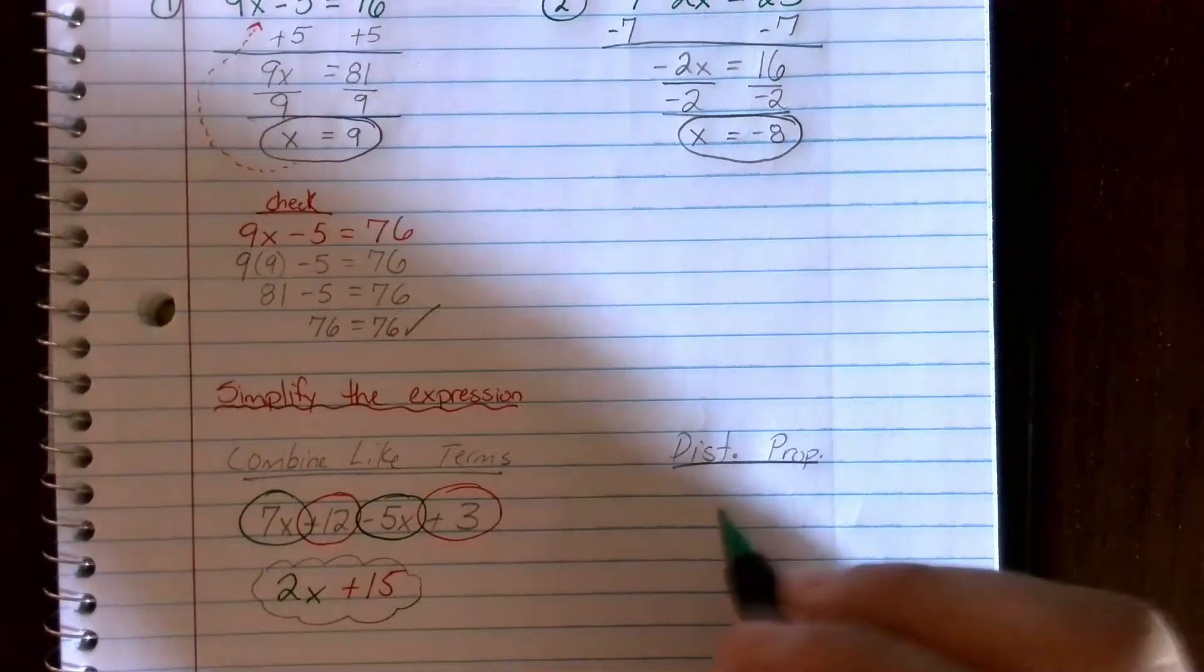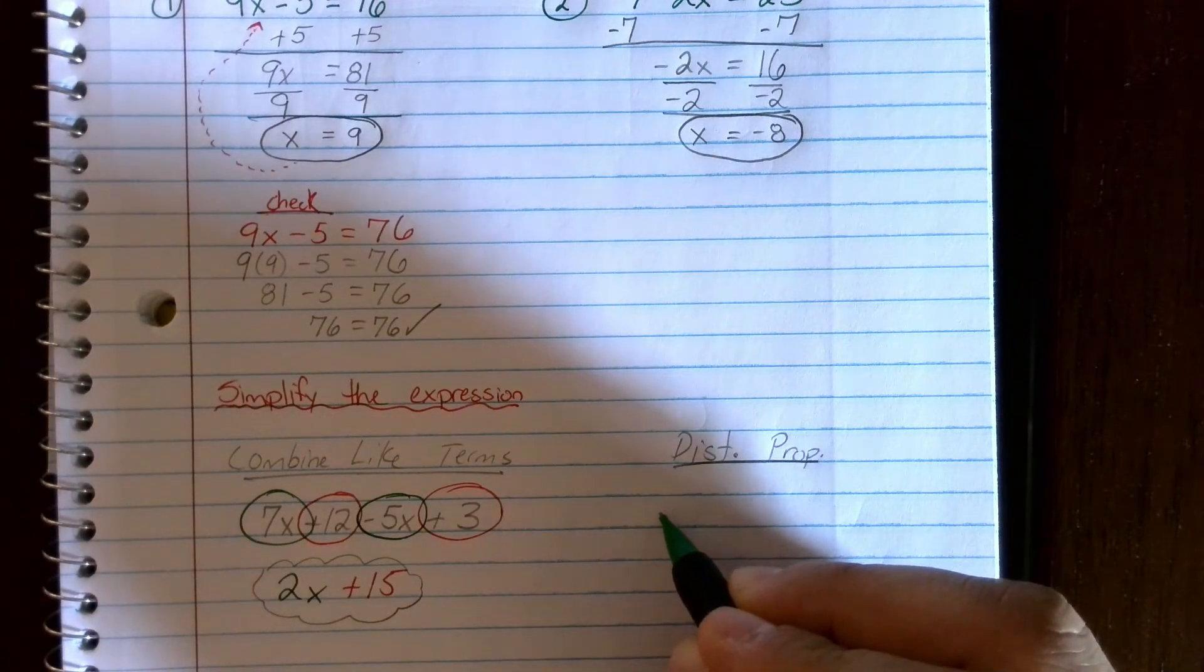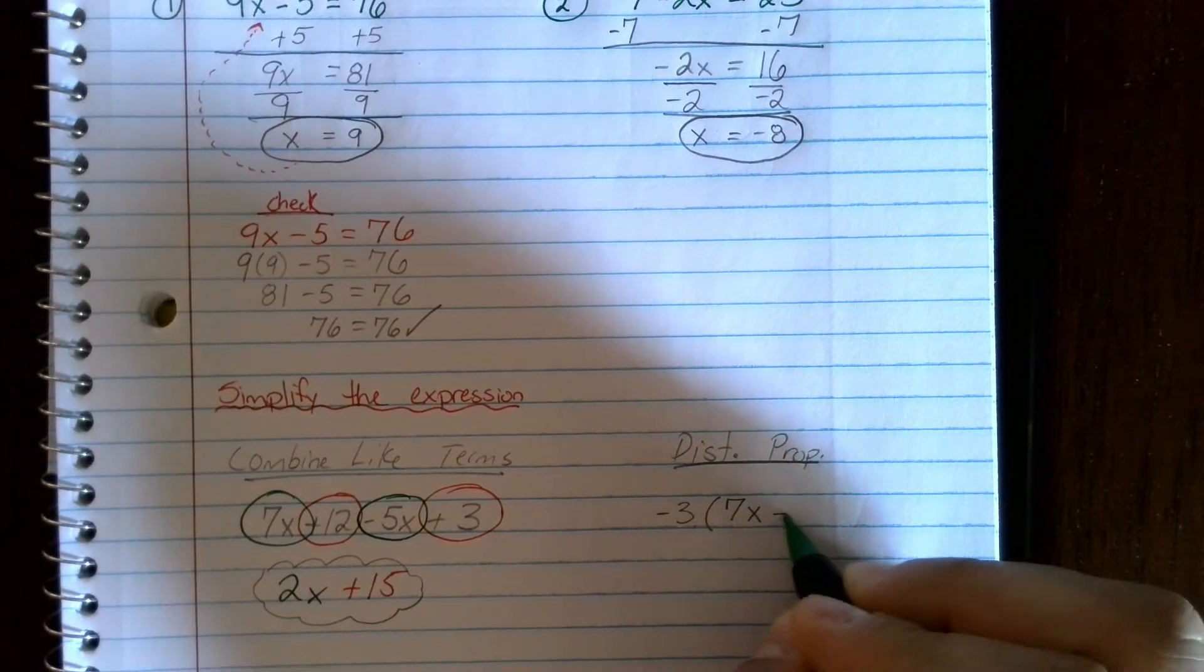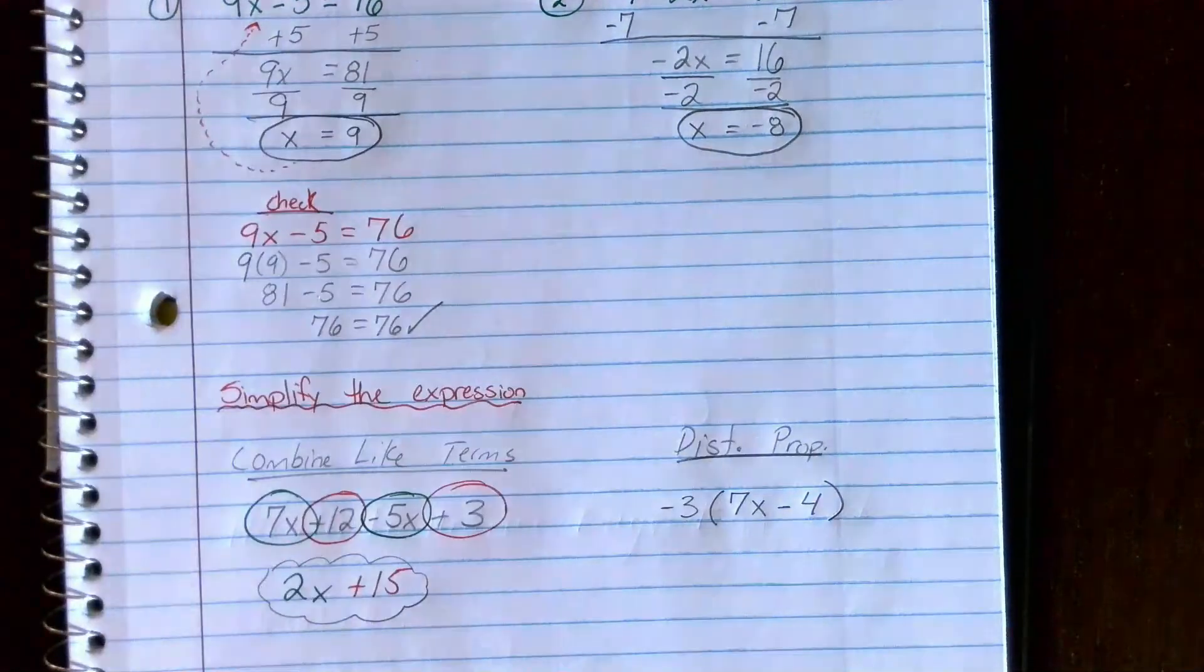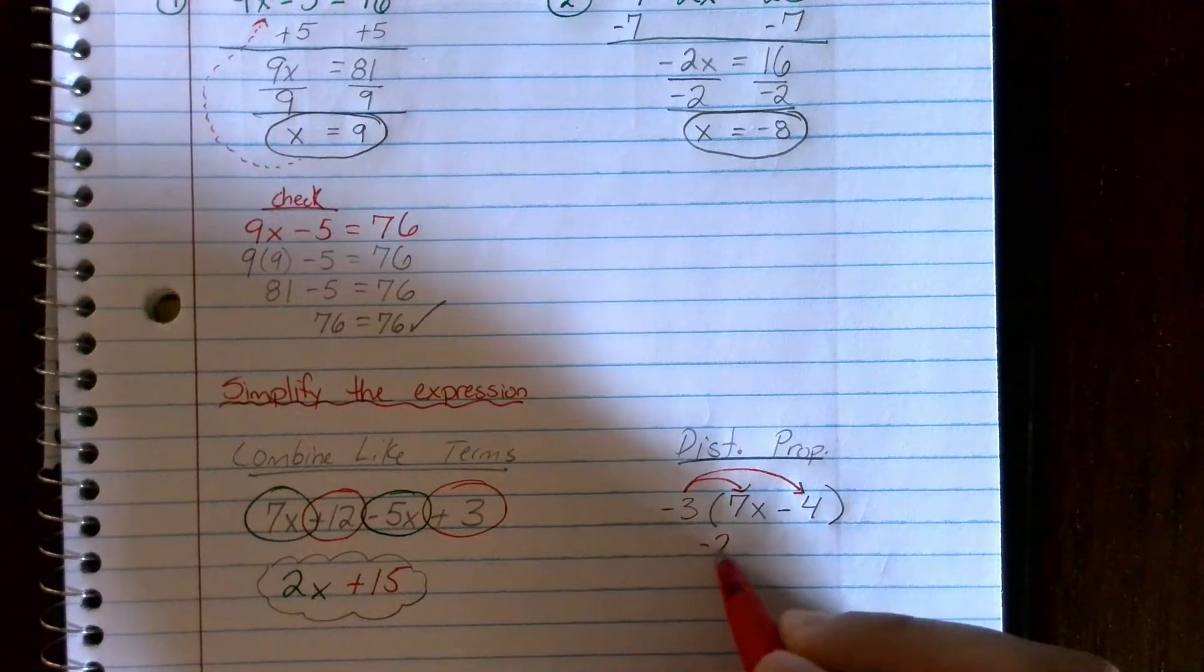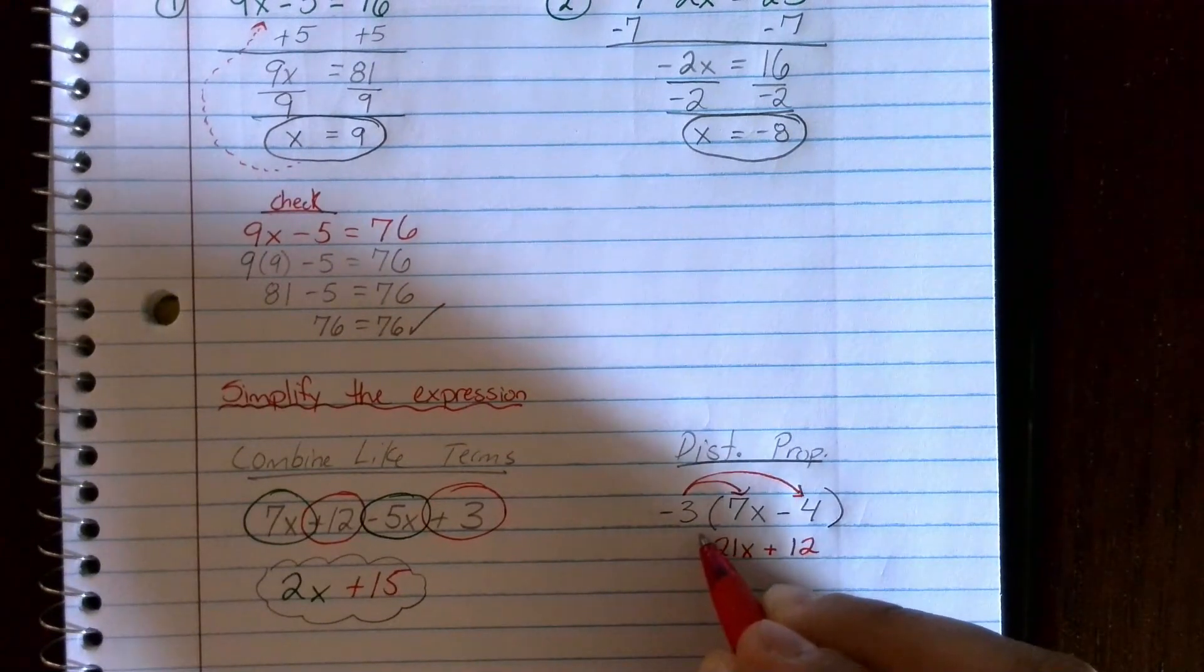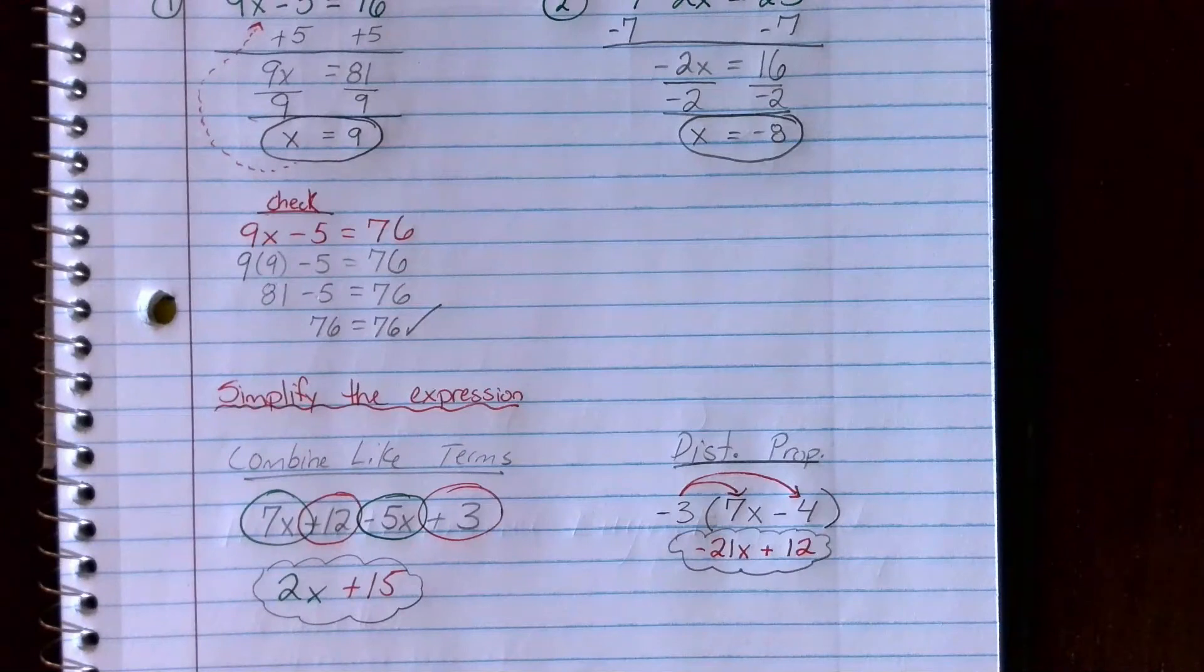The other one is distributive property. If I'm multiplying to an expression, if I had something like, let's make it a hard one, if I have a negative 3 that I'm distributing to maybe something like 7x minus 4. When I distribute this I'm basically multiplying negative 3 times the entire group, everything that's in the parentheses here. So it's going to be negative 3 times the 7x and negative 3 times the negative 4. Negative 3 times 7x is negative 21x, and negative 3 times the negative 4 is positive 12. So that would be the simplified expression here after I've done the distributive property. Just a quick reminder of something else we did to simplify expressions from back earlier in the year.